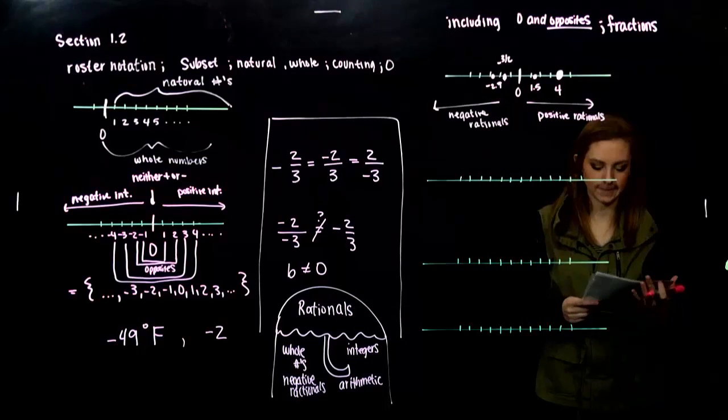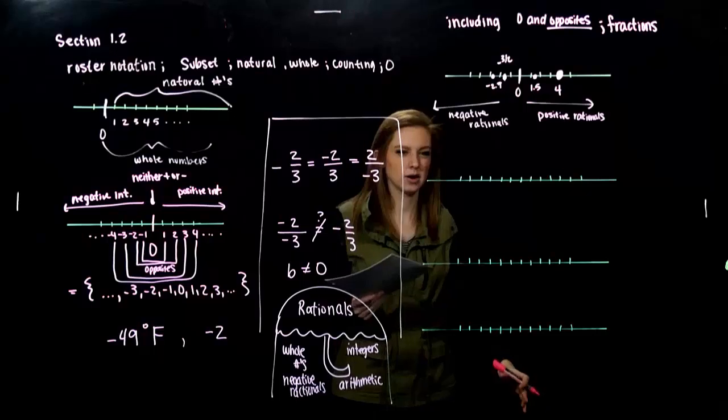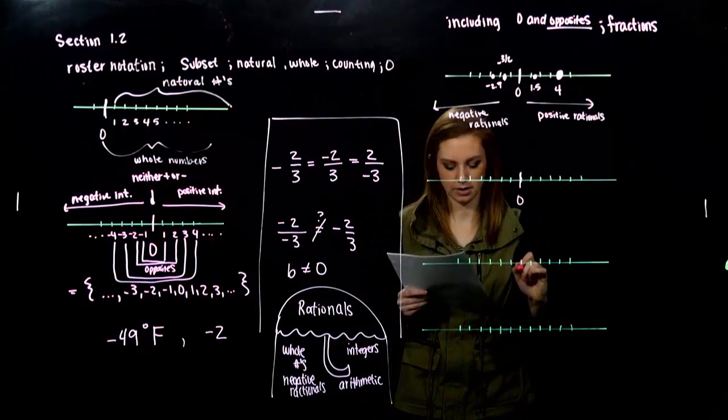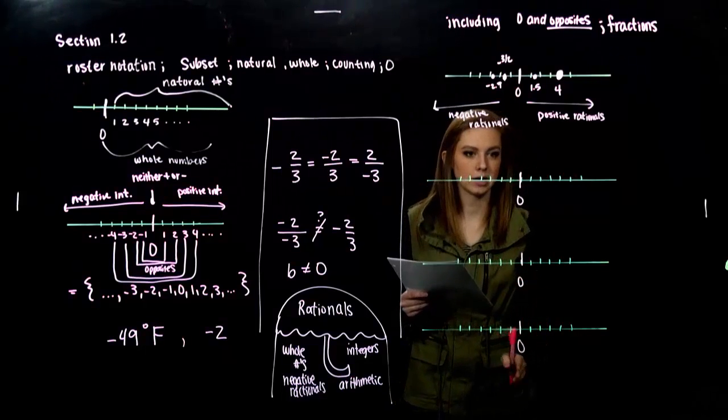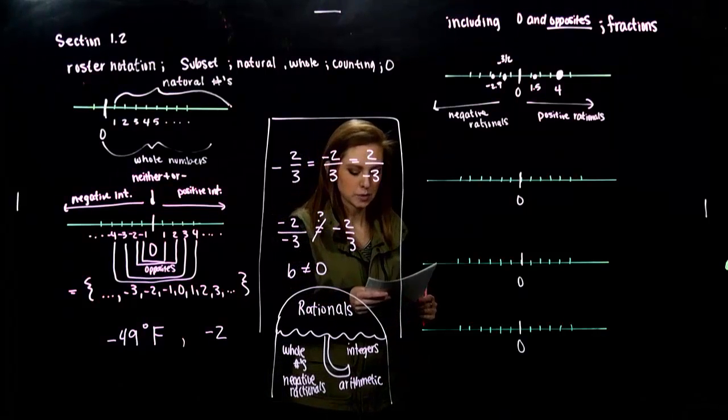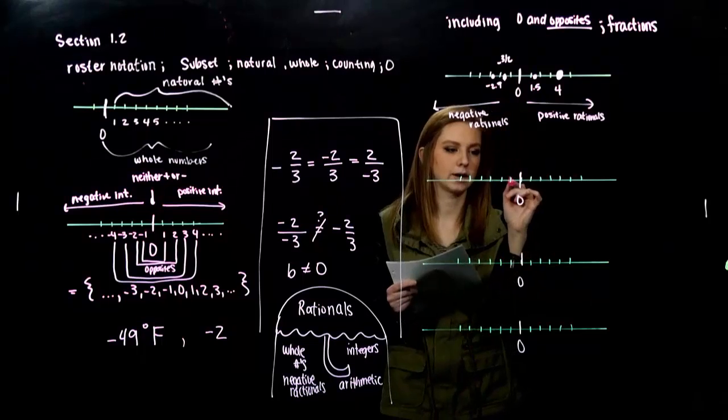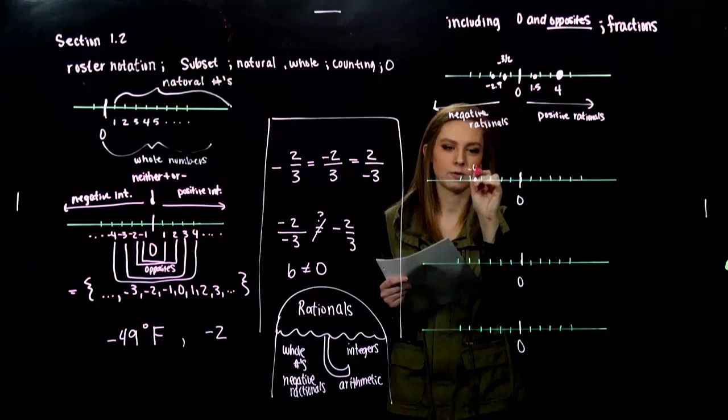Alright. So, graph each number on the number line. Just so we can tell where are these with respect to kind of my starting mark of zero. So, I'm just going to go down the line and make them all line up. And, the first one we want to graph. Negative four point five. So, I go over negative one, two, three, four, and half. So, that's negative four point five.